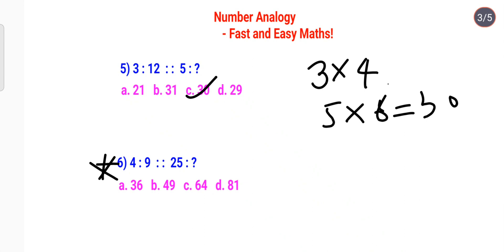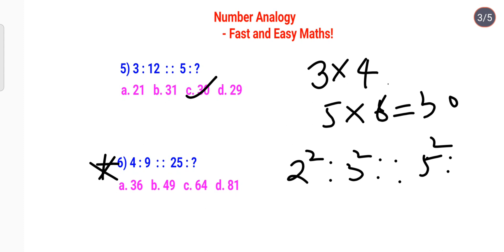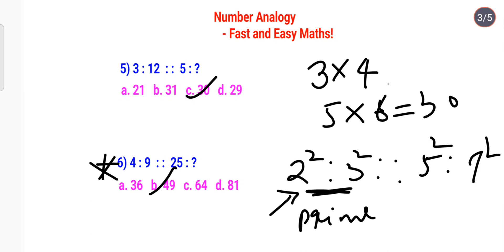For this next one we have 4, 9, 25 — which are 2², 3², and 5². You need to find the relation for what comes after 5². A lot of students take 6² and mark option A, but that is a grave mistake. You have to look at the overall series — the series is following prime numbers: 2, 3, 5, 7. So you should take 7², not 6². The correct answer is option B. When solving these questions, you need a clear understanding of prime number series, odd and even numbers.